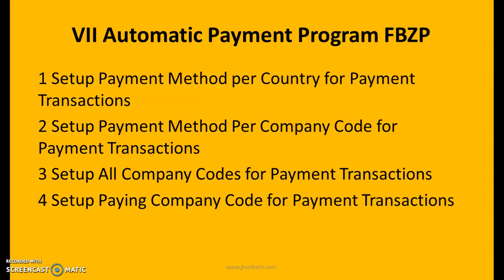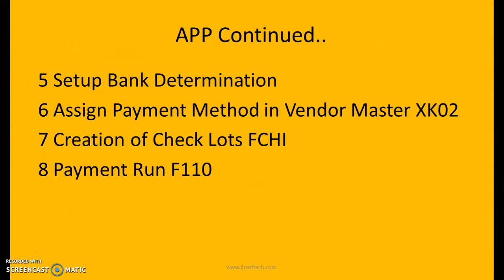Automatic payment program: as we already know, if you have already done the configurations, the transaction code is FBZP. The steps are: first, set up payment methods per country for payment transactions; second, set up payment methods per company code; third, set up all company codes for payment transactions; fourth, set up paying company code for payment transactions; fifth, set up payment bank determination.